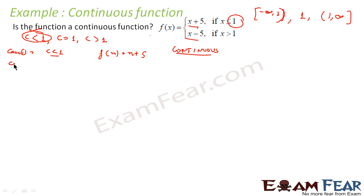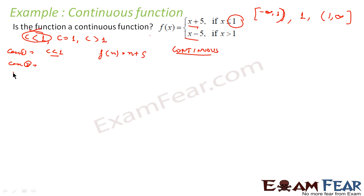Case 3 is also continuous because it is again a polynomial function. For Case 2, we don't know whether the left hand limit and the right hand limit are the same or not, or whether the limit exists at all. So let's find the left hand limit.